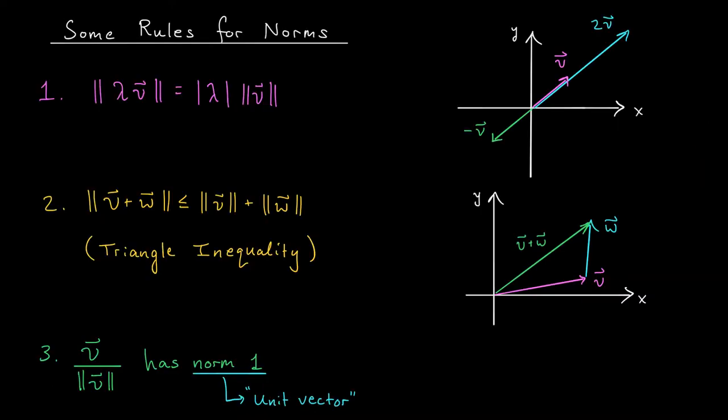We've just seen how to define length for vectors in Rn. Well, there are some important properties that come from that definition that I'd like to talk about. Firstly, we have this property involving scalar multiplication. If you multiply your vector by a scalar lambda, the length of the resulting vector will be the absolute value of lambda times the length of V. And this makes sense.